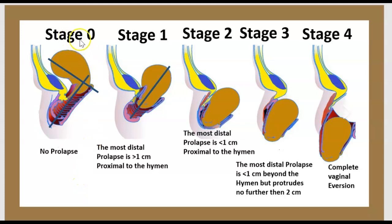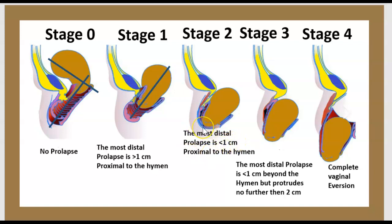Stage 0: no prolapse, 90-degree angle maintained. Stage 1: the most distal prolapse is over 1 cm proximal to the hymen. Stage 2: the most distal prolapse is less than 1 cm proximal to the hymen. Stage 3: the most distal prolapse is less than 1 cm beyond the hymen, but protrudes no further than 2 cm.